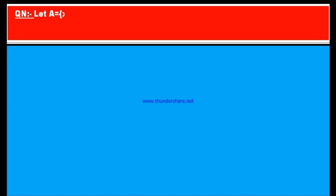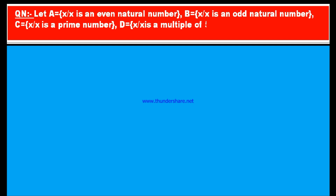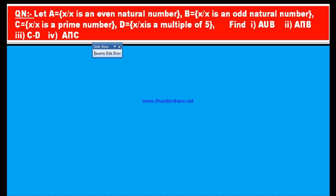Here is the first question. Let A = {x | x is an even natural number}, B = {x | x is an odd natural number}, C = {x | x is a prime number}, and D = {x | x is a multiple of 5}. Find A union B, A intersection B, C minus D, and A intersection C.